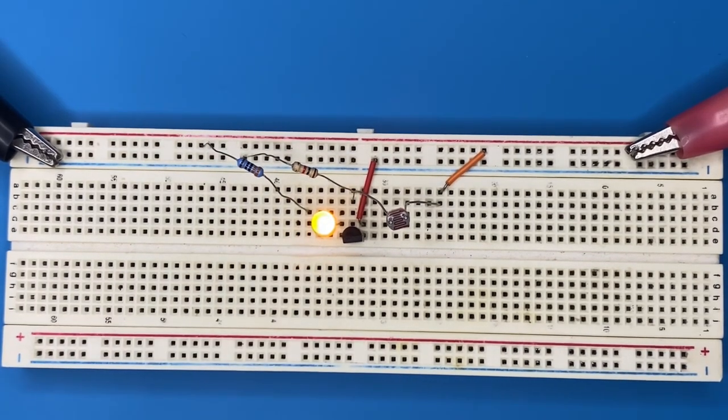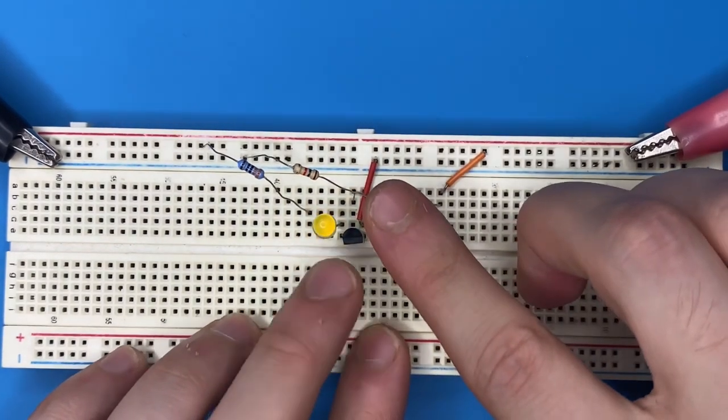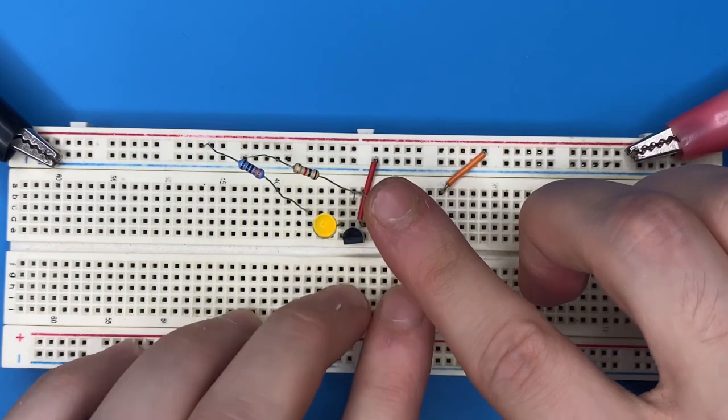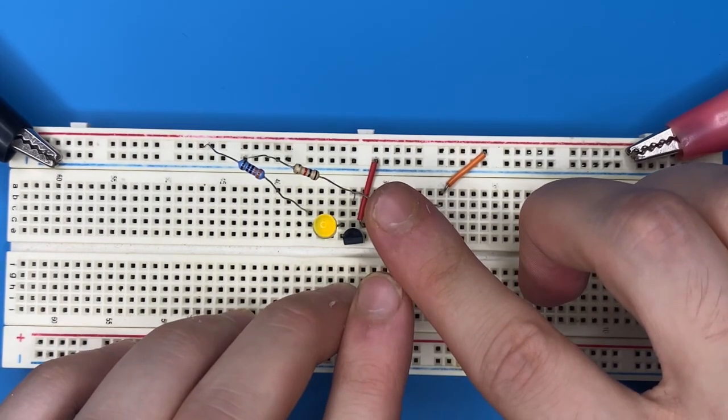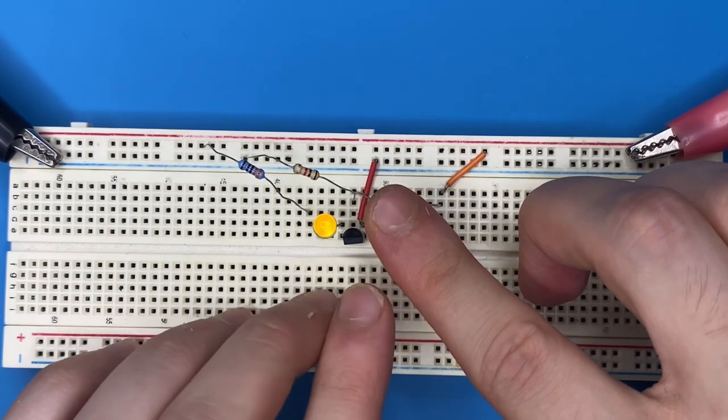If I put my finger on the LDR, we switch to dark mode. In that case, the LED turns off since the LDR's resistance is too high and current cannot flow easily through the transistor.